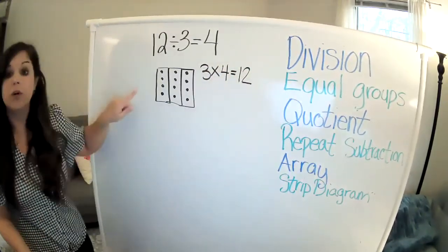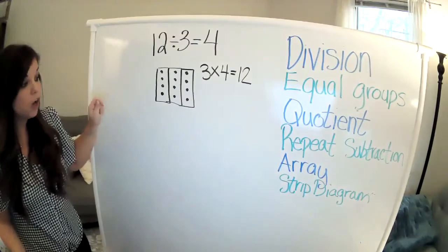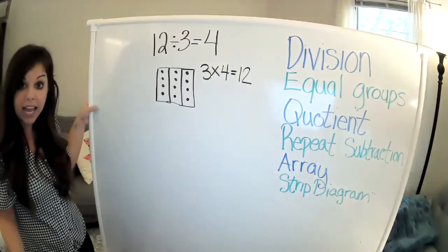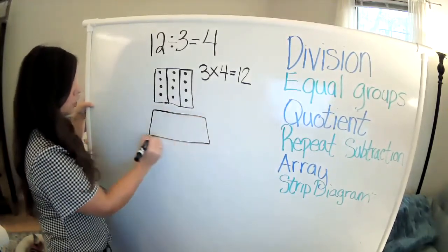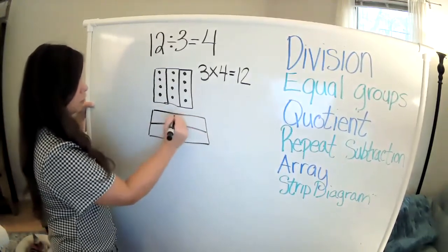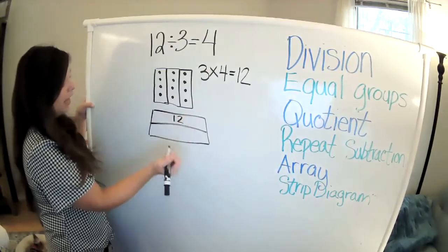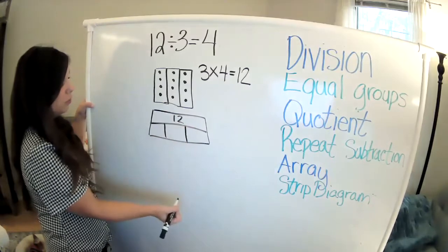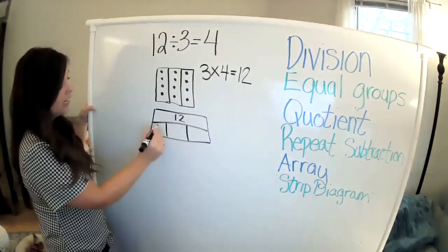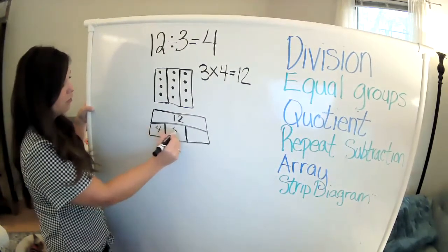You can use an array. You could also use a strip diagram or farmhouse. In a strip diagram, I am showing that I have 12 as my whole. And I am splitting it into three equal groups. And inside each group, I have four.